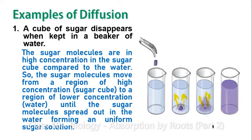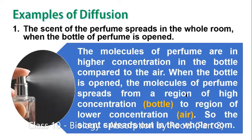Here we find movement of sugar particles from a region of high concentration to a region of low concentration. Another example: if you open a perfume bottle in one corner of the room, after some time you can get the smell of the perfume throughout the whole room. The molecules of the perfume, which are in high concentration inside the bottle, move out into the air where their concentration is less, and diffusion spreads them across the entire room.